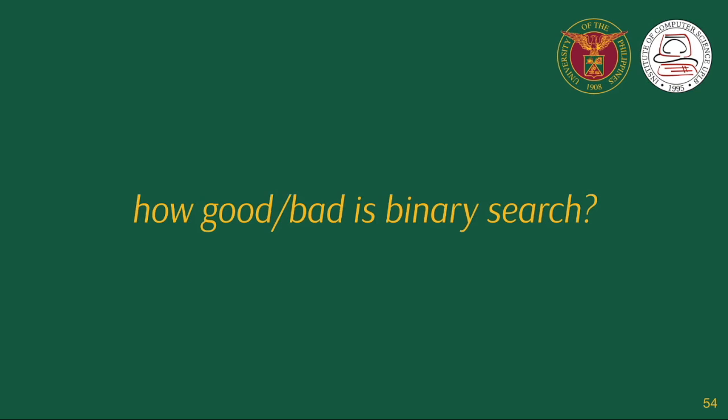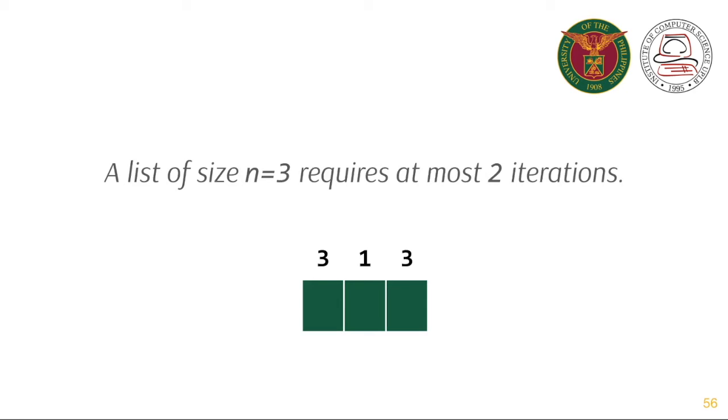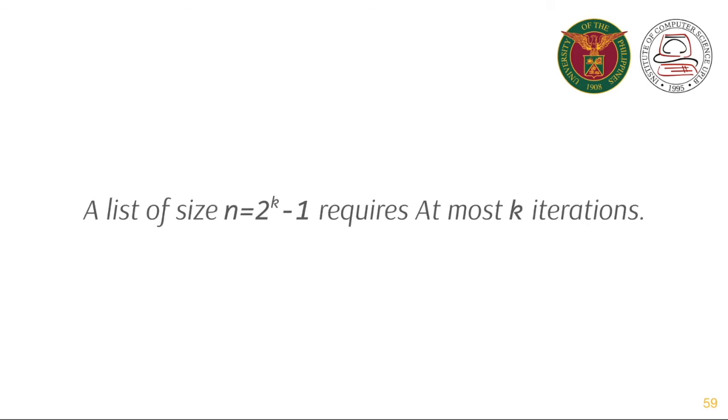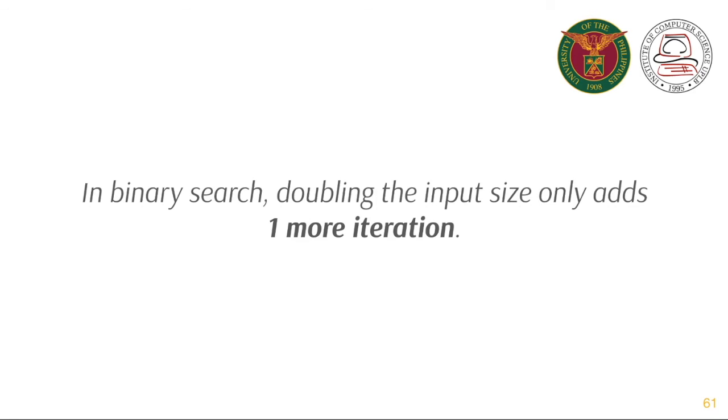What is the performance of binary search in terms of the number of loop iterations? At the worst case, a list of size 1 requires 1 iteration, a list of size 3 requires 2 iterations, a list of size 7 requires 3 iterations, a list of size 15 requires 4 iterations, and a list of size 2 raised to k minus 1 requires at most k iterations. In general, a list of size n requires log of n base 2 iterations. In binary search, doubling the input size only adds 1 more iteration.